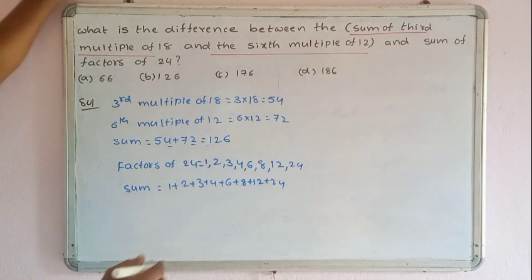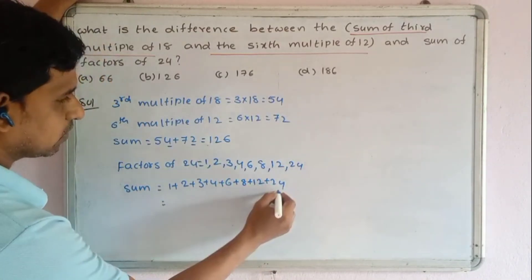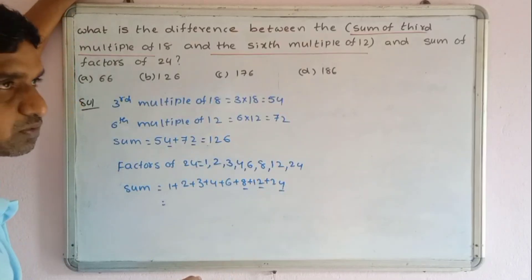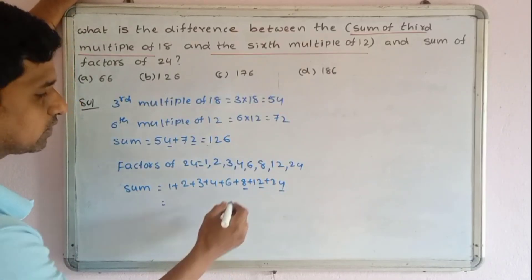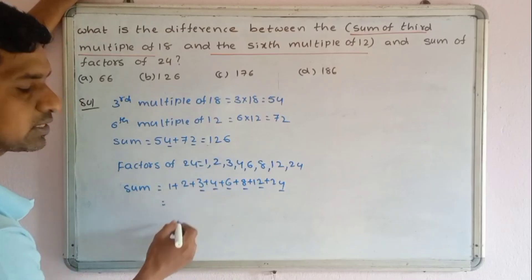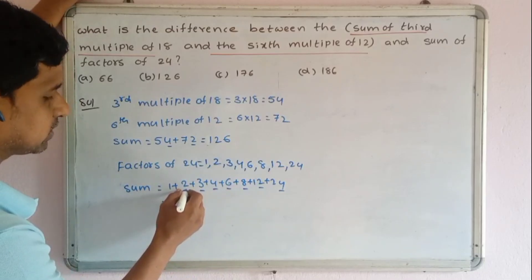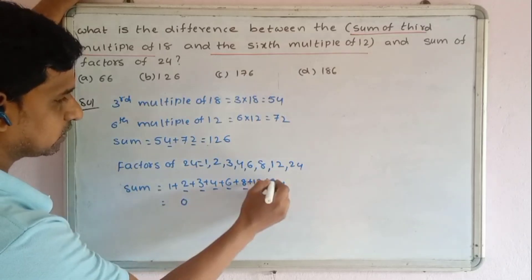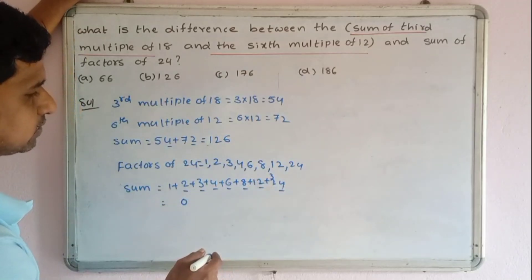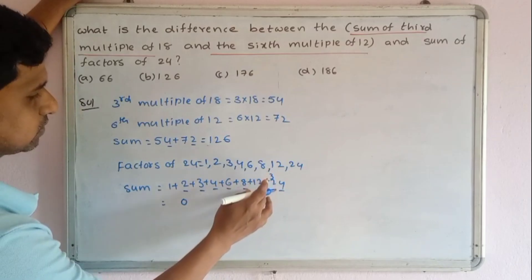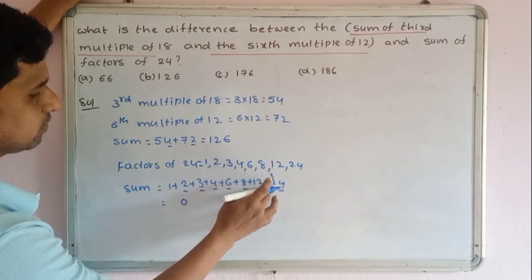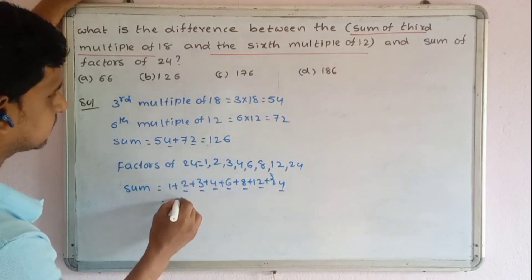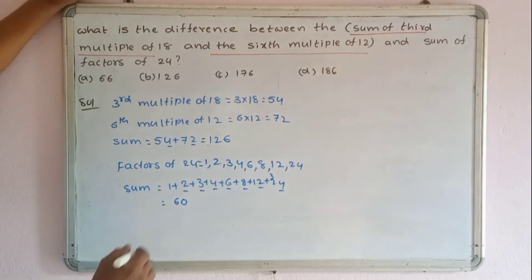Adding all the factors: 1+2=3, 3+3=6, 6+4=10, 10+6=16, 16+8=24, 24+12=36, 36+24=60. So the sum of factors is 60.